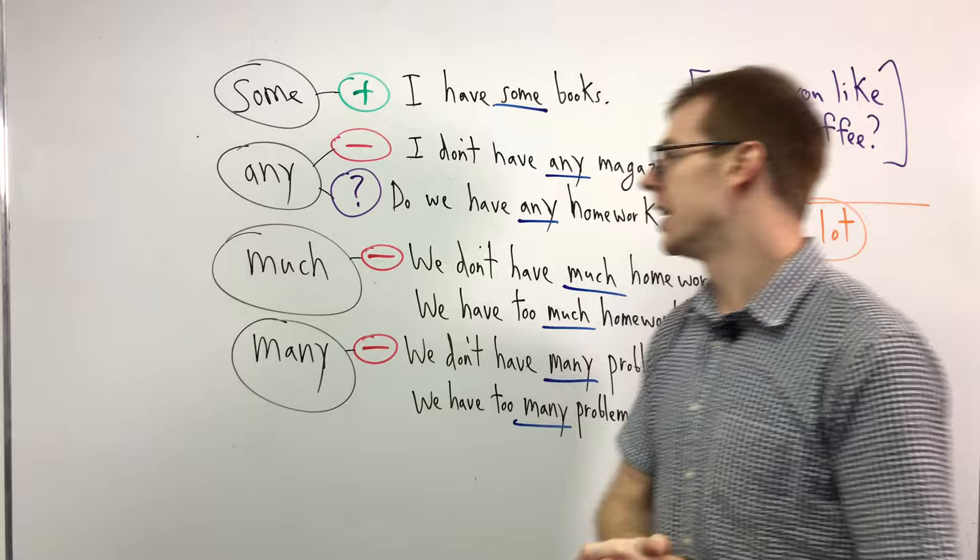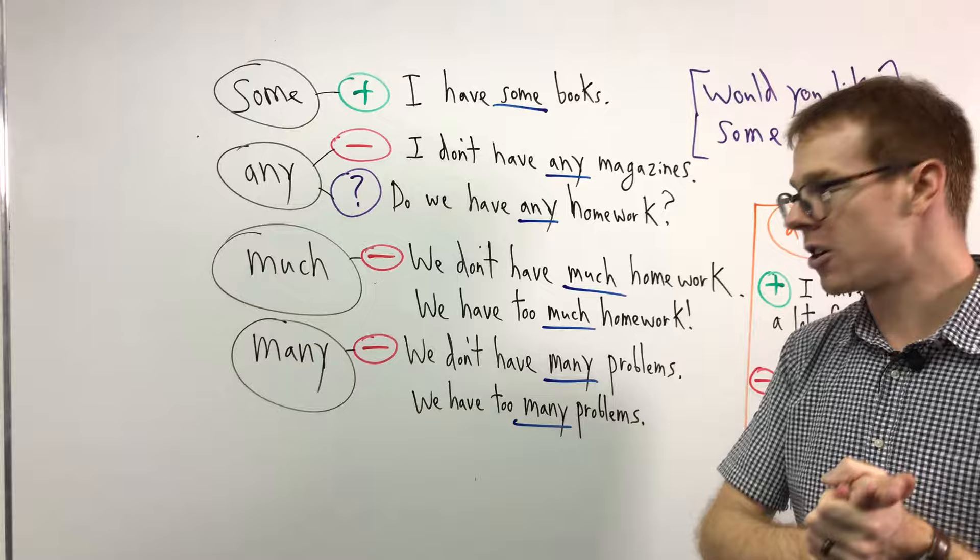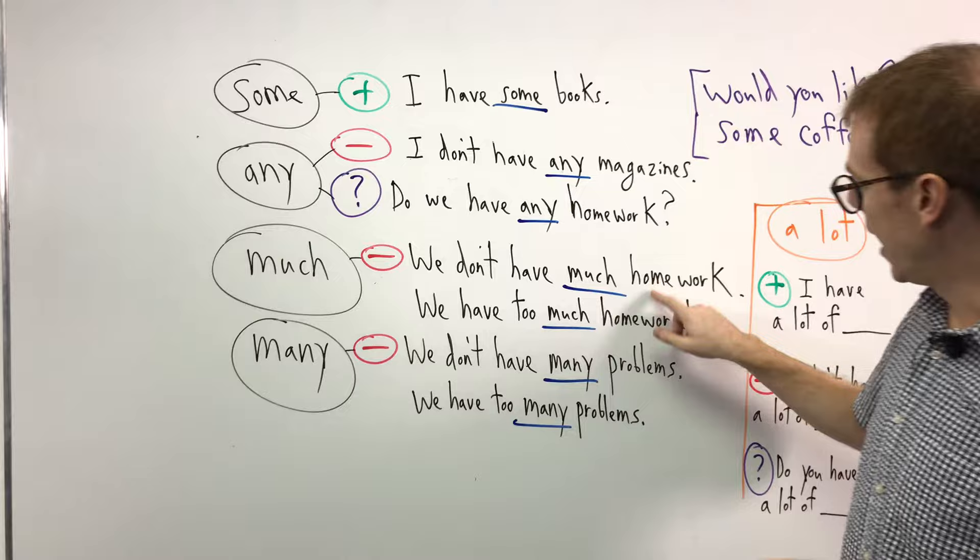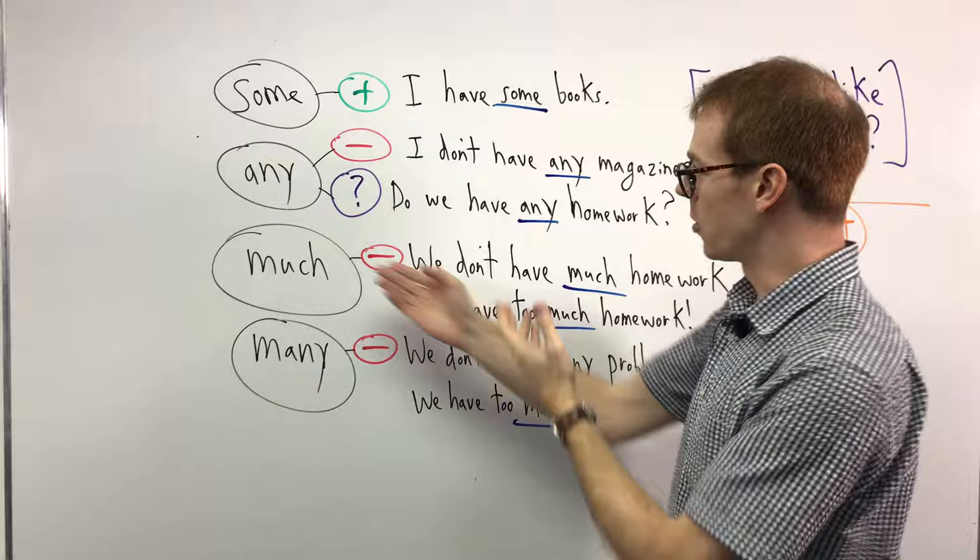If we move on, here's our much and many. If you watched our last video, you know the reason why we use much versus many. Remember that much is for if something is uncountable, like homework. Three homework, four homework, five homework, we don't say. So with homework we would use much.